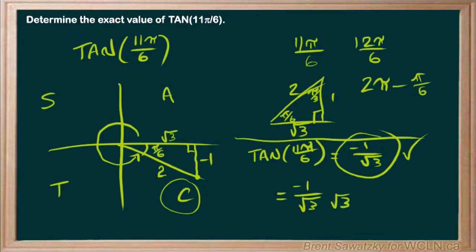but if we were to multiply by root 3 and root 3, we would end up with negative root 3 over root 3 times root 3 is just 3, and that's another form of that same answer.